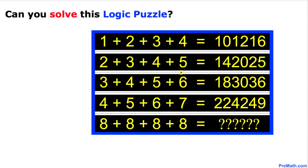Welcome to pre-math. In this video tutorial we have got this math logic puzzle, and here as you can see we got these four numbers. When we add them we get this six-digit number, and the question mark is: when we add these four numbers eight plus eight plus eight plus eight, what number is going to be at this location? Can you figure out this answer on your own?